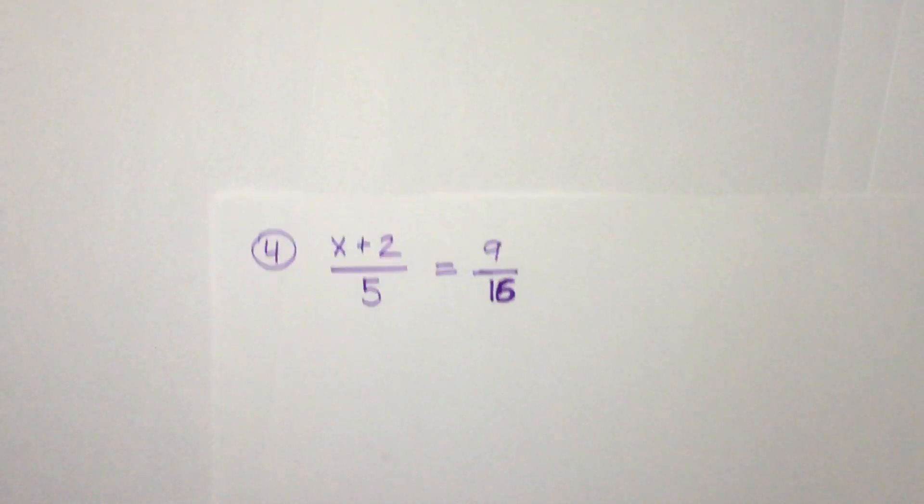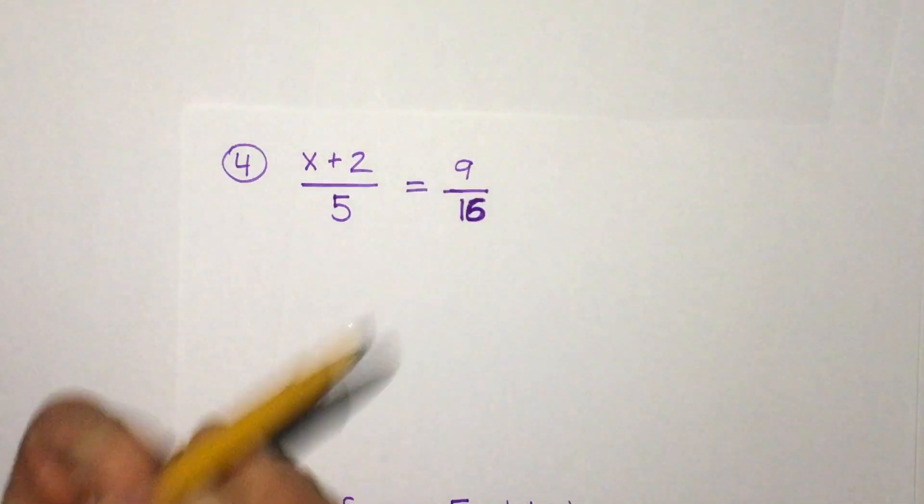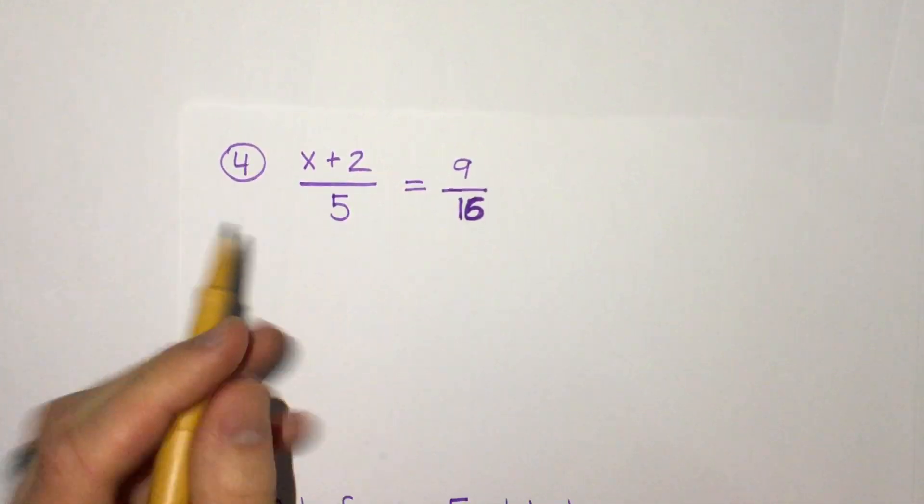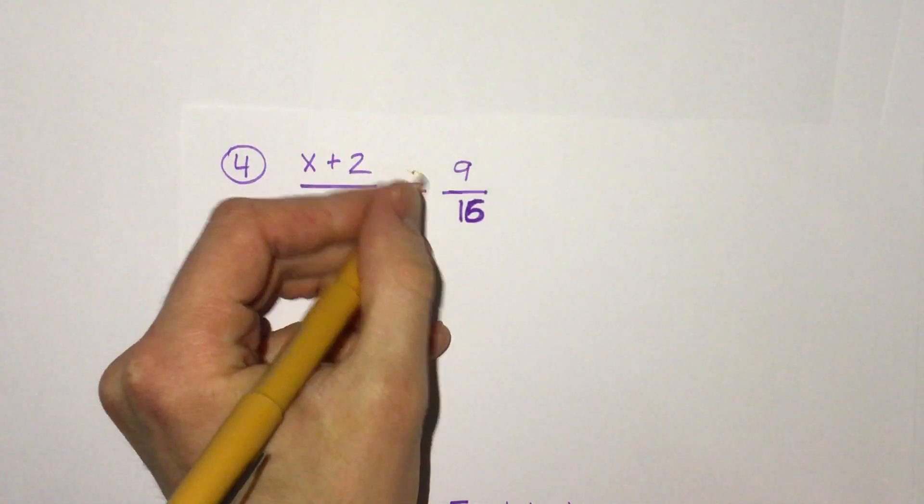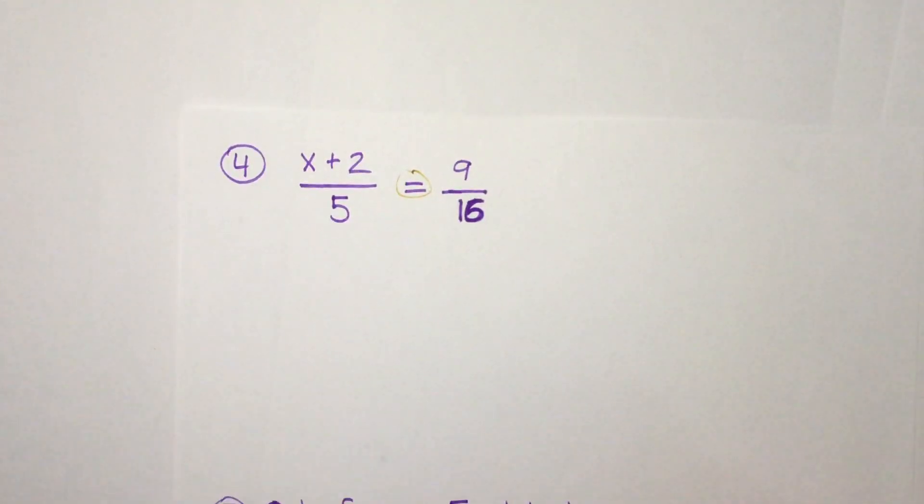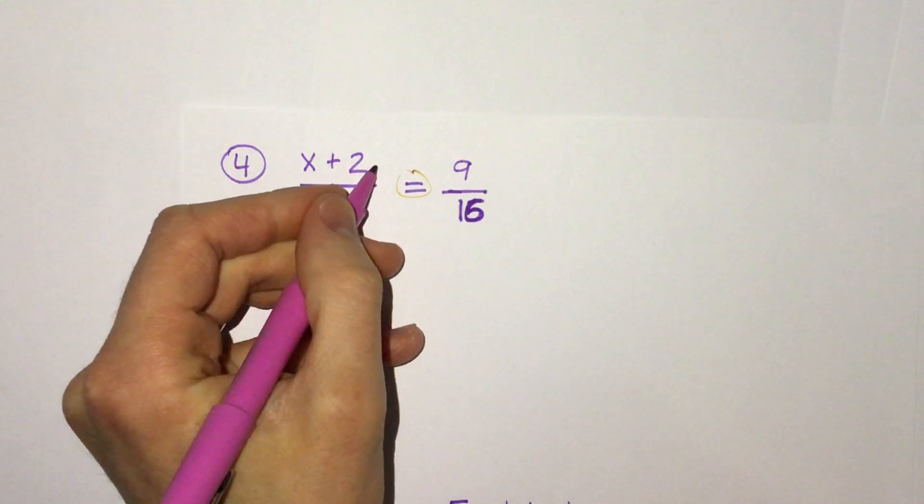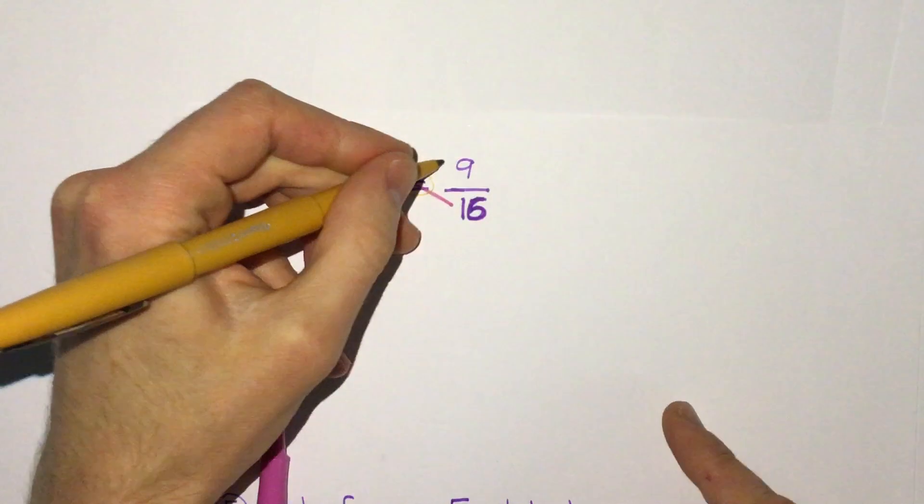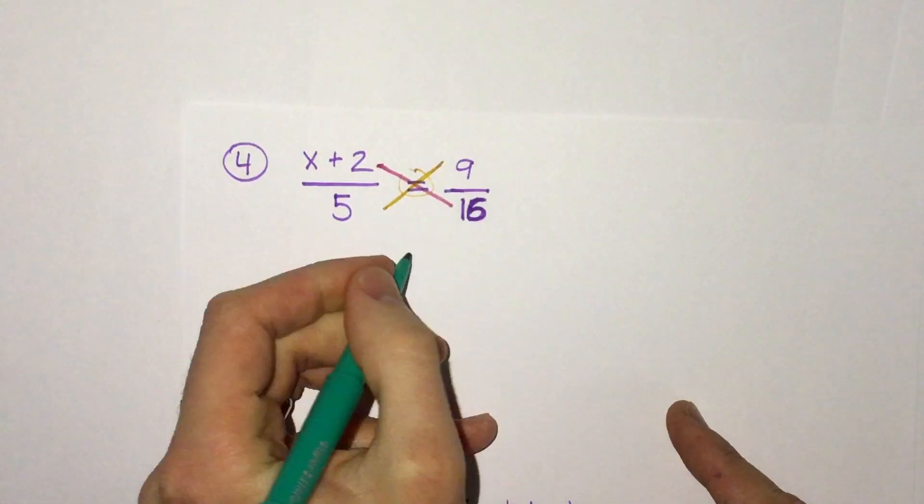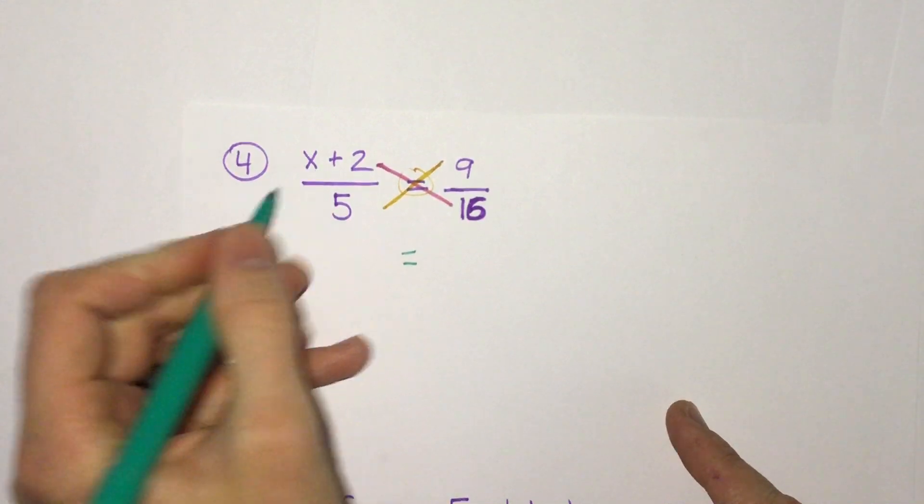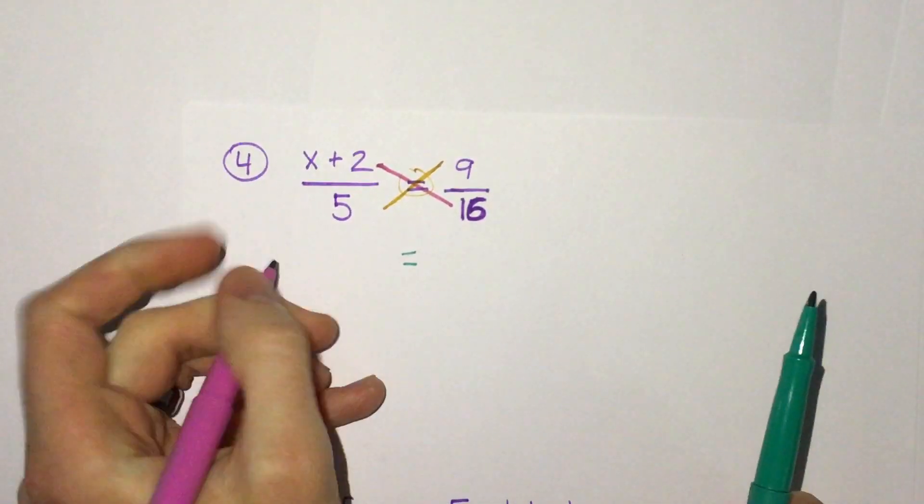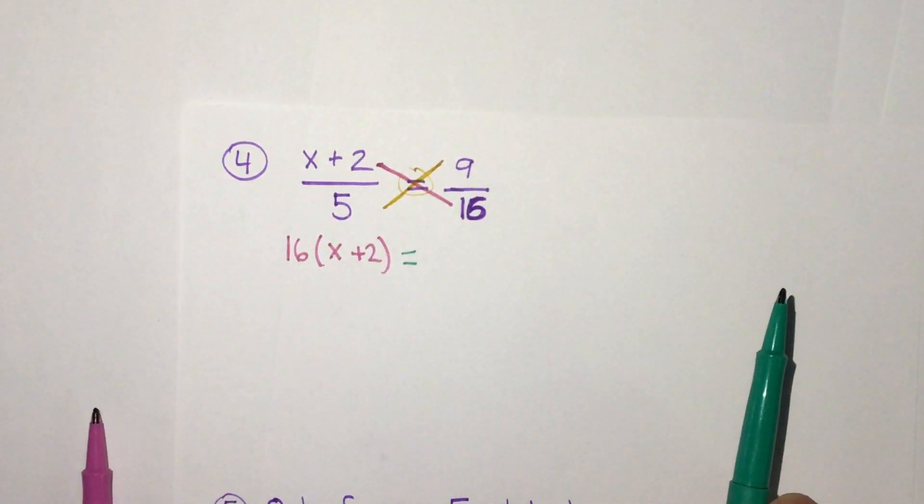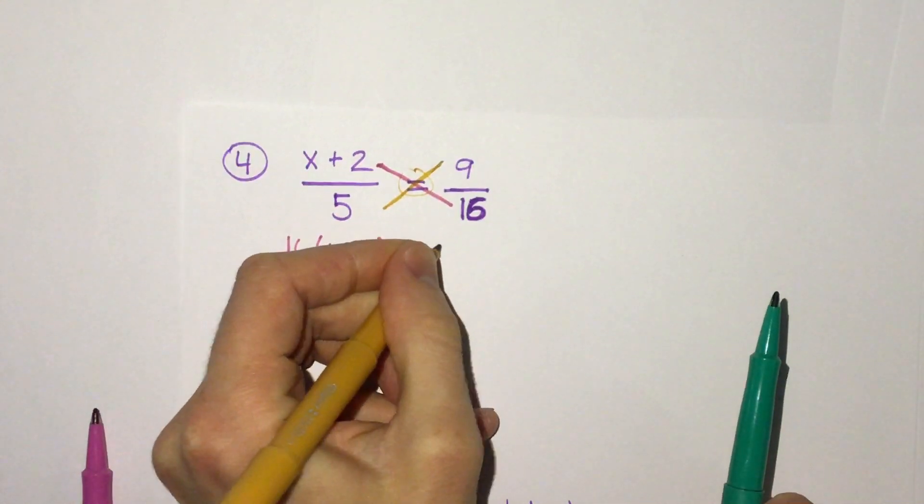What happens if we have more than just x in our fraction? Here we have x plus 2 over 5 equals 9 sixteenths. Well, we still have equal fractions. One fraction is equal to the other fraction with nothing else, so we can still do the same thing. We can multiply our diagonals. The only difference is we're going to have a little bit more to do. Here we're doing 16 times x plus 2, so what we have to do is write it as 16 times parentheses x plus 2 equals 9 times 5. We have 45.